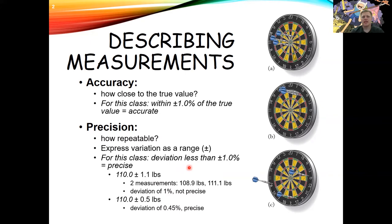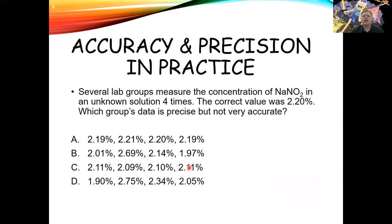Let's practice with an iClicker quiz. Several lab groups measure the concentration of NaNO₂ in an unknown solution four times. The correct value was 2.20 percent. Which group's data is precise but not very accurate? Go ahead and look at those data and try to figure it out — pause the video.